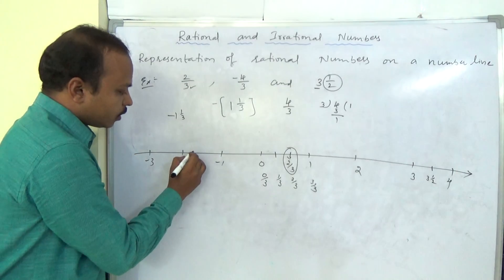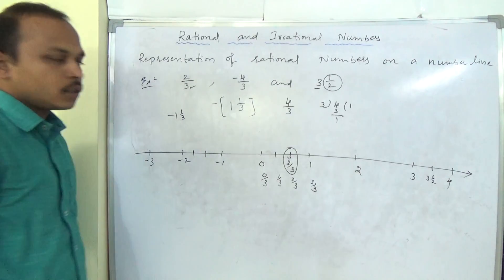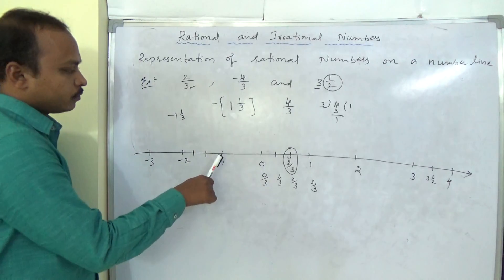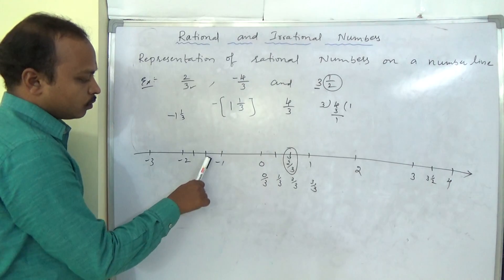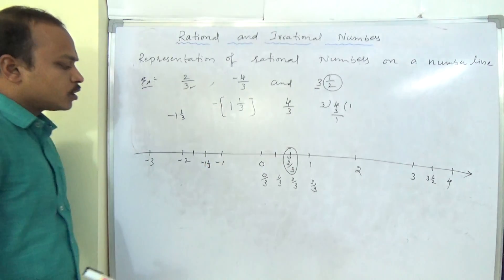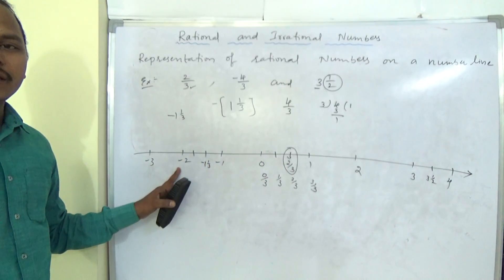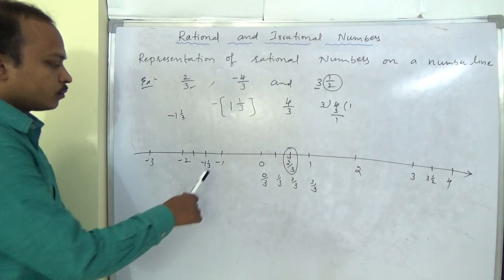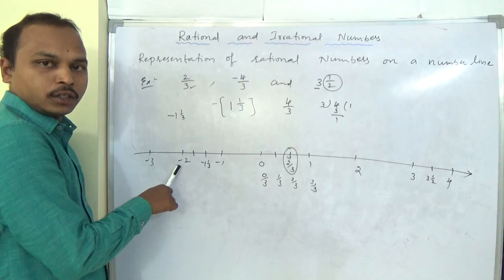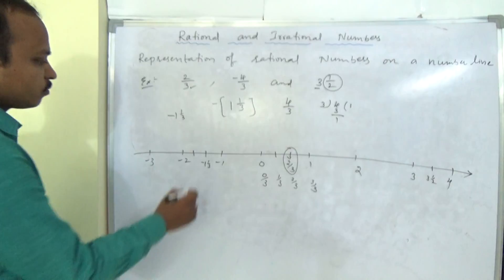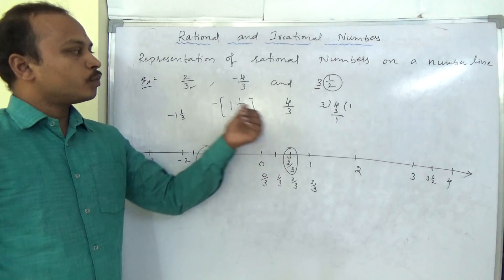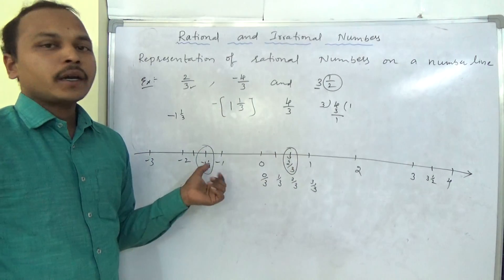Denominator is 3. We should make 3 equal parts. Same as we discussed previous. First, second, third. Now, from right side, we want to count. This minus 1, 1 by 3. Because next is 2 by 3, again 3 by 3. So we will join to this. Minus 1 by 3. Minus 1, 2 by 3. Again, minus 1, 3 by 3. This we can represent for minus 1, 1 by 3. Negative, positive or any mixed. We can represent all this number line like this.